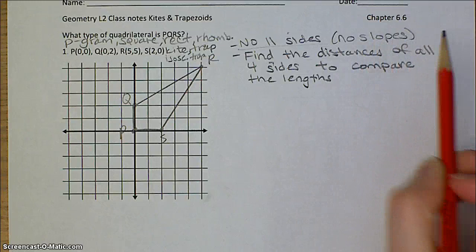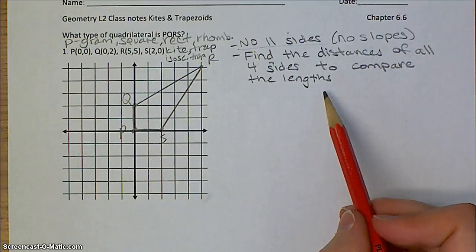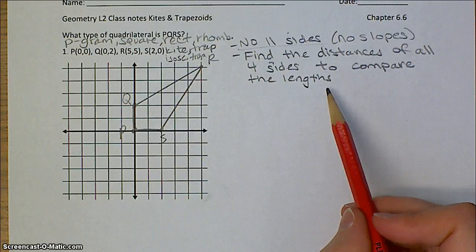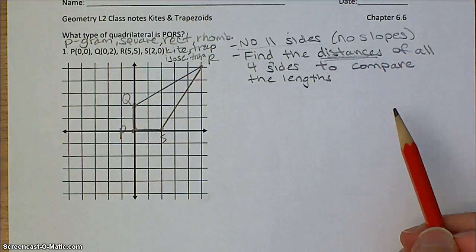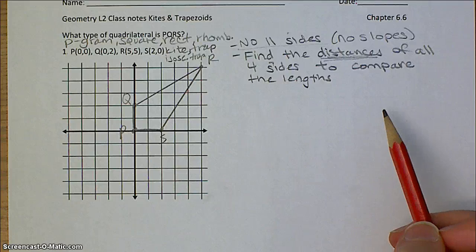However, with all kites, we know that the distances or the lengths of two pairs of consecutive sides will be congruent. So what we want to do is use the distance formula to find the distances of all four sides. That way we can compare the lengths.